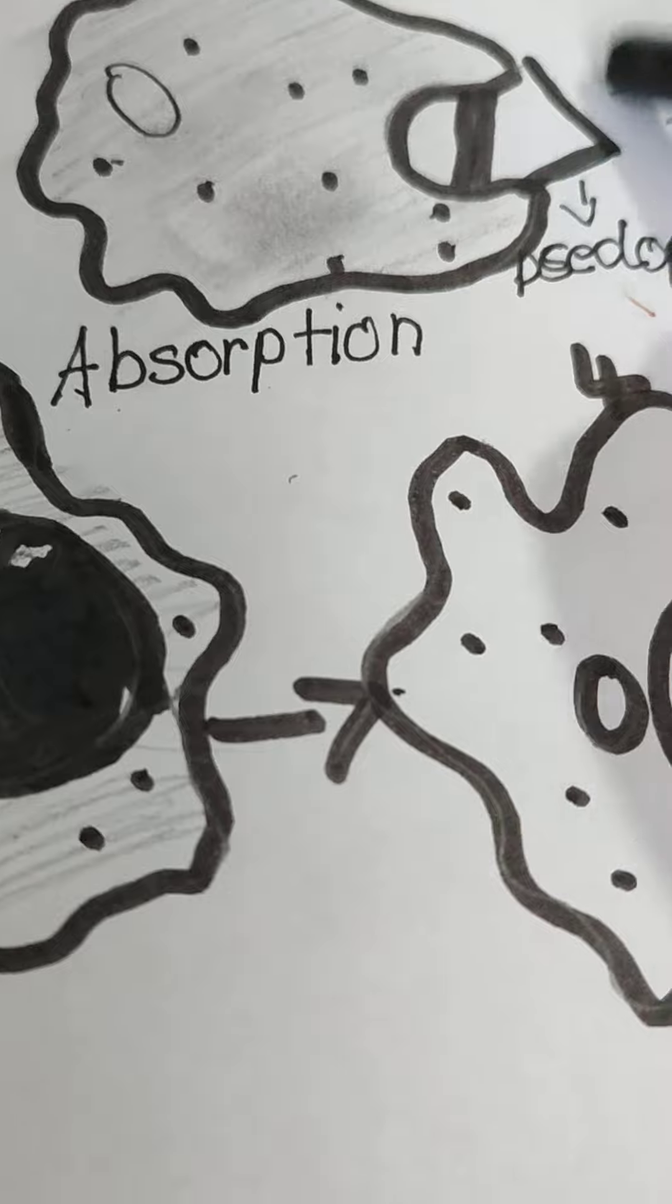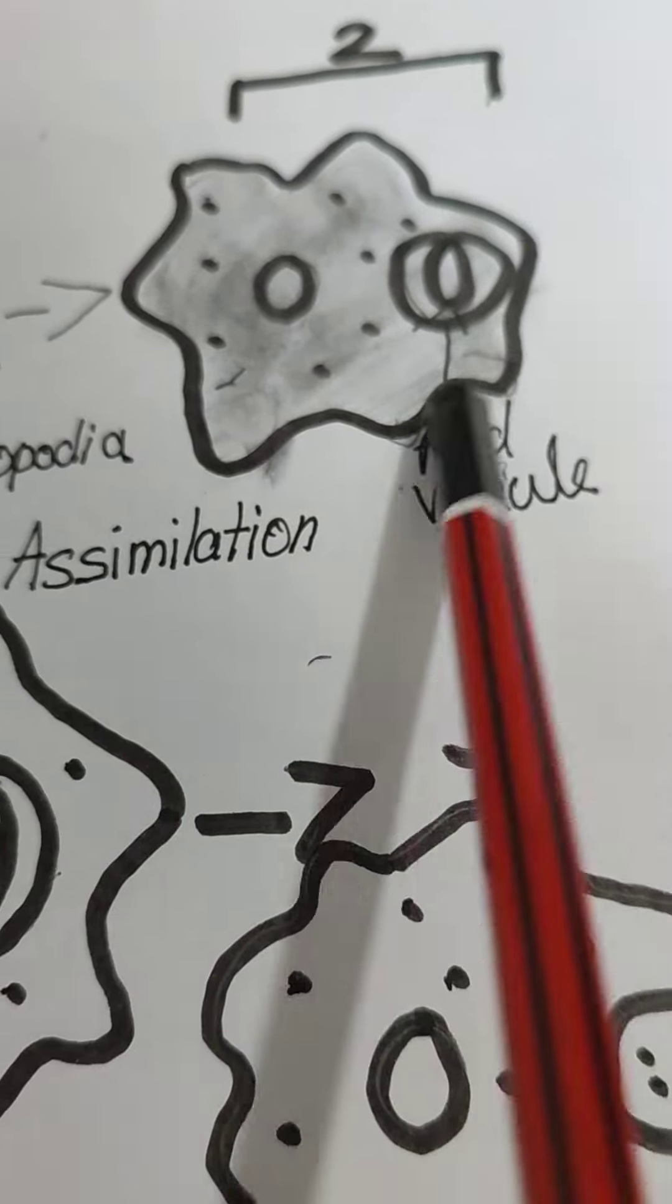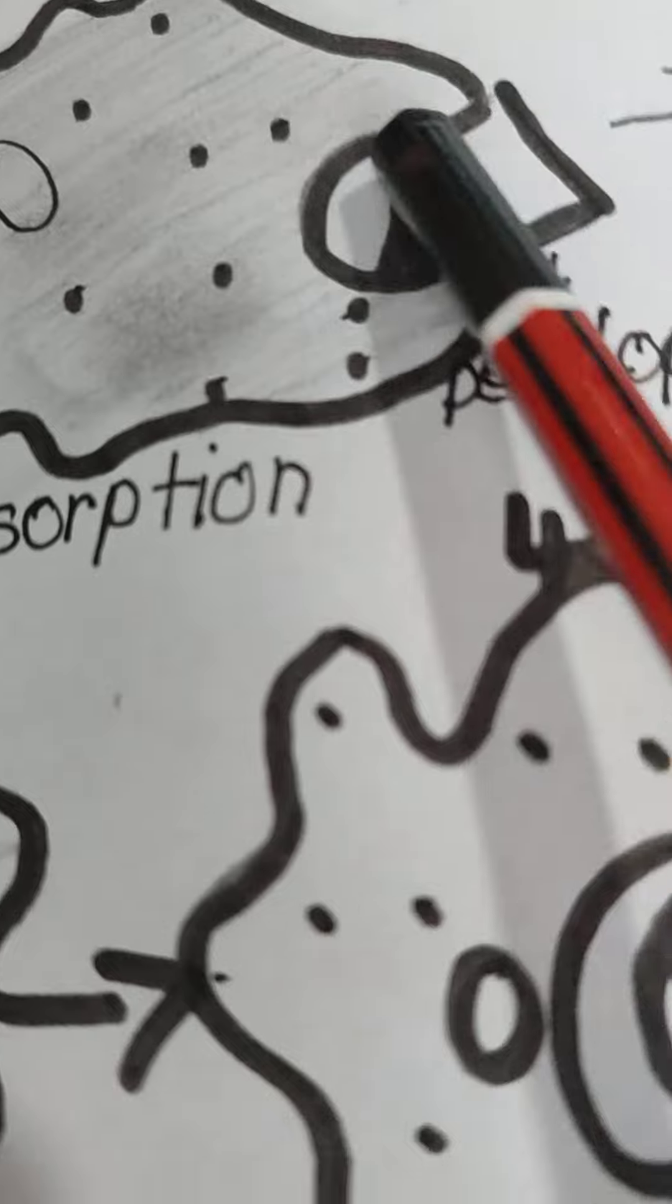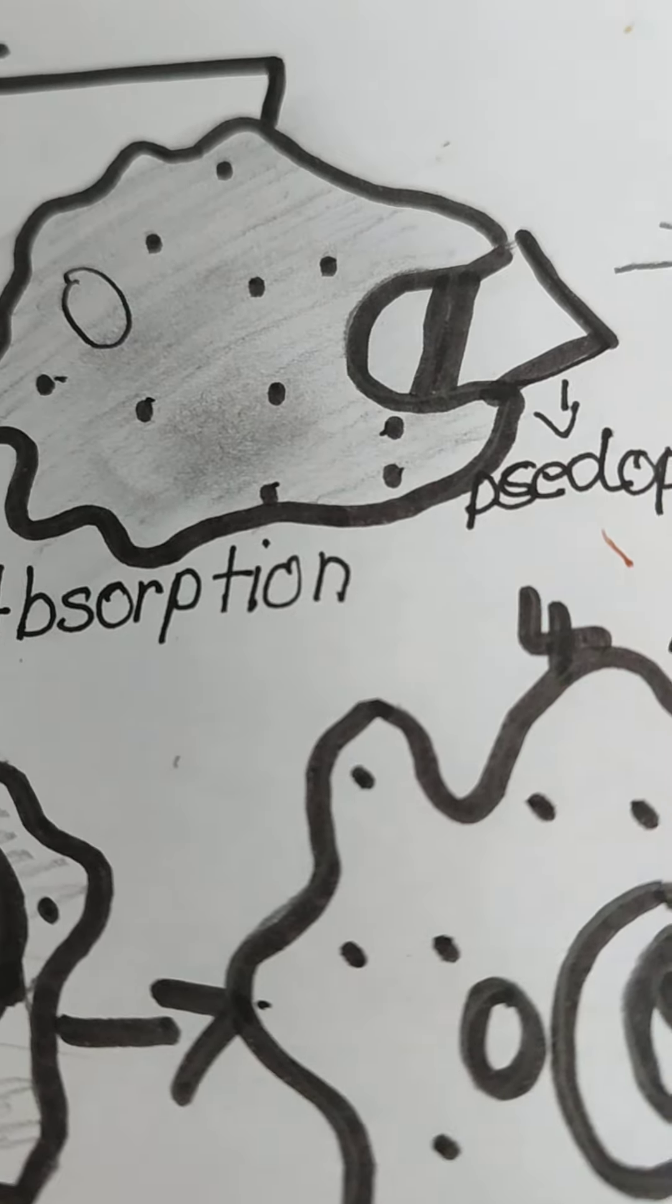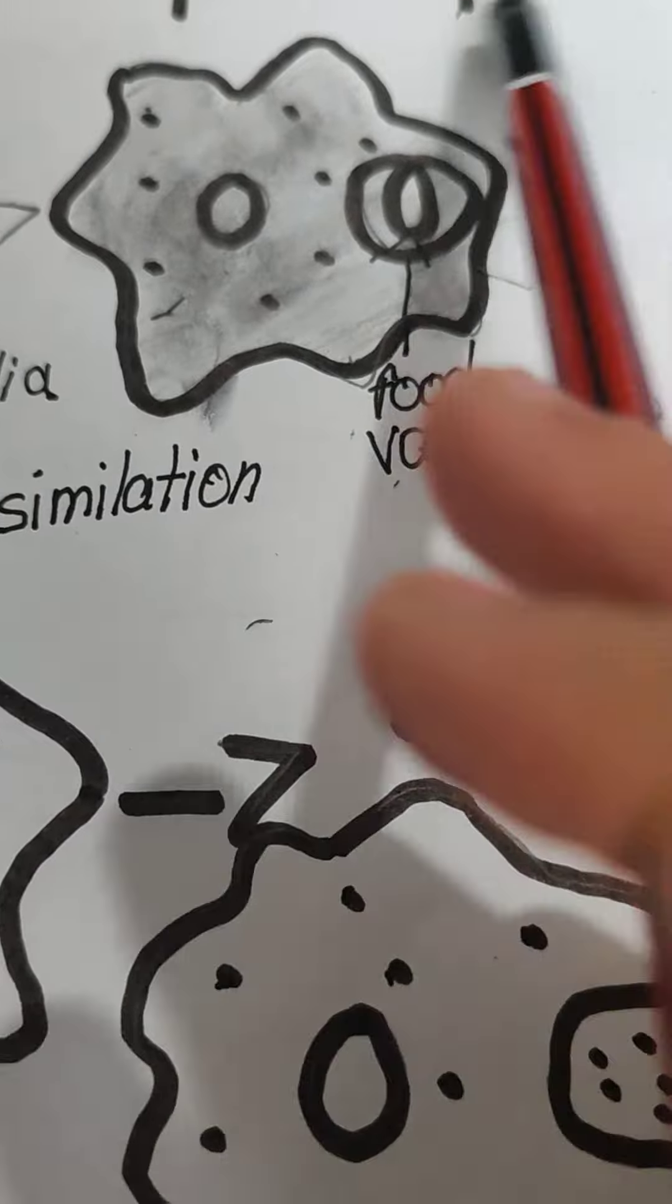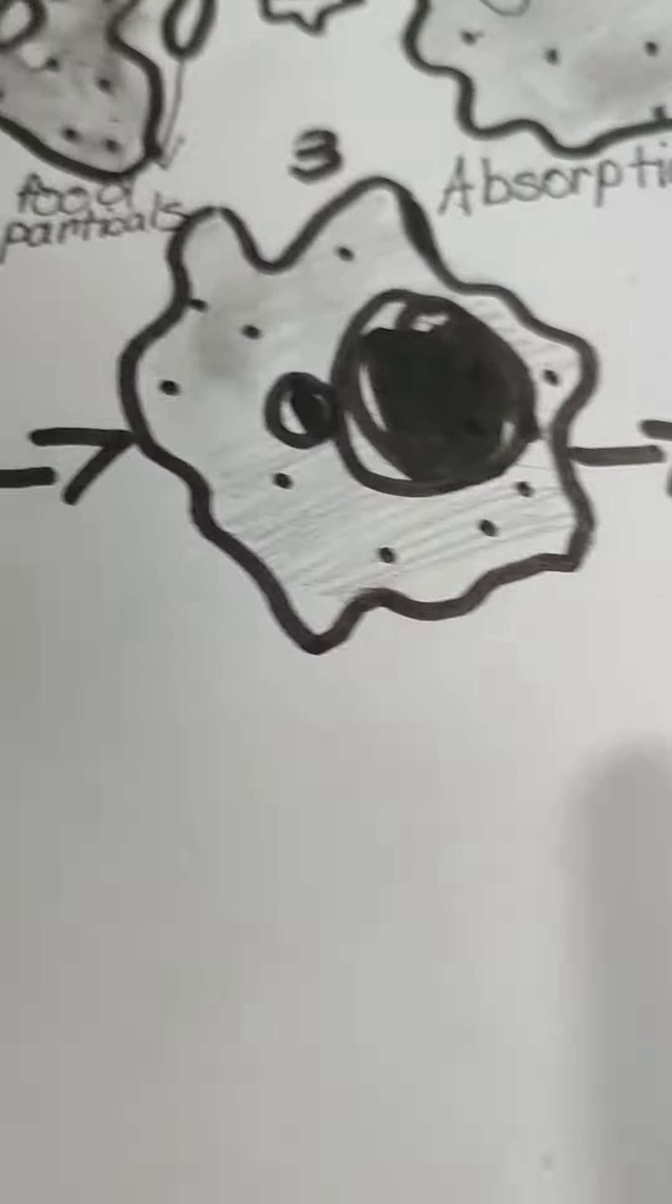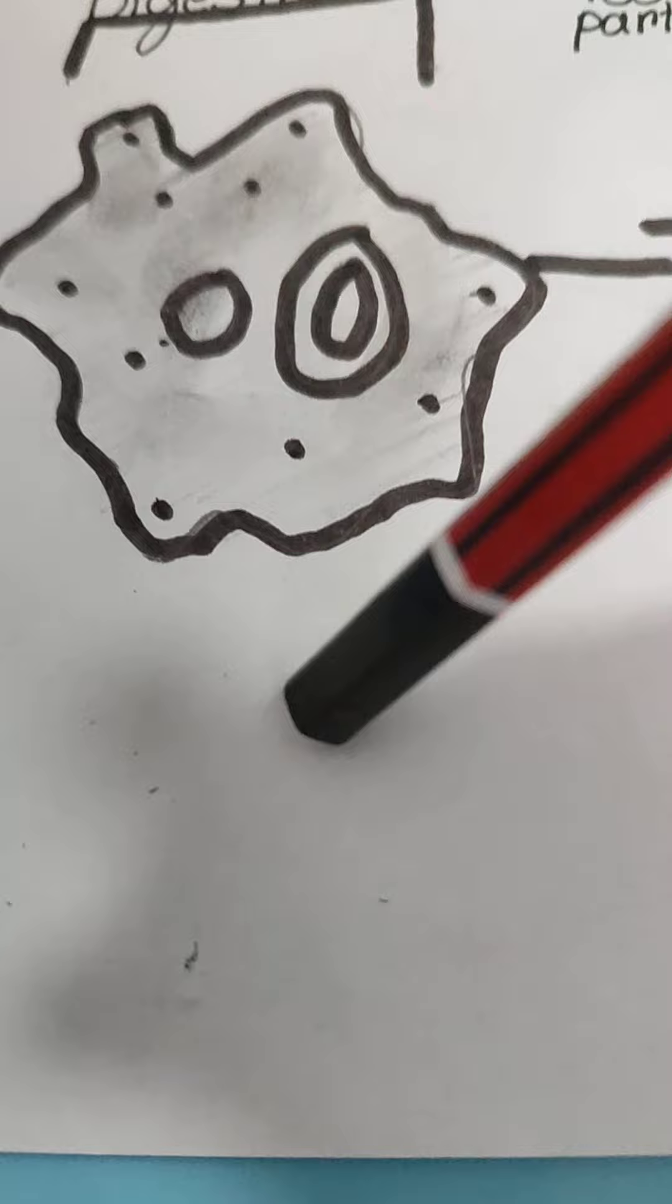It is capturing the food with the pseudopodia and taking the food inside the amoeba. Here you can see the food vacuole surrounded by the food. The second step is digestion.